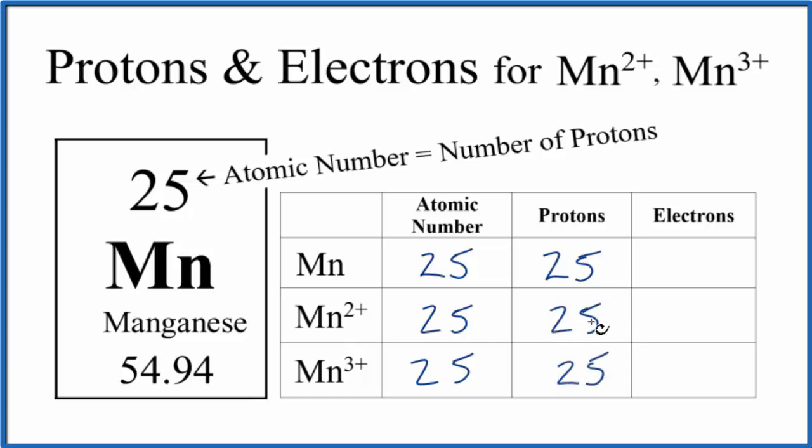The only thing that's going to be different between the atom, the neutral atom, and its ions is the number of electrons.